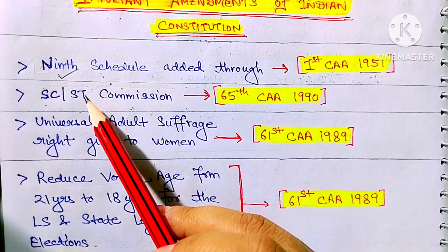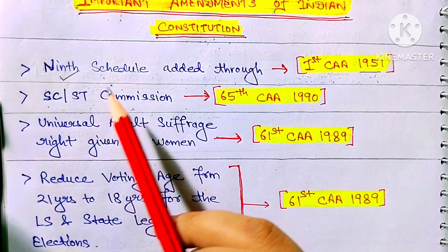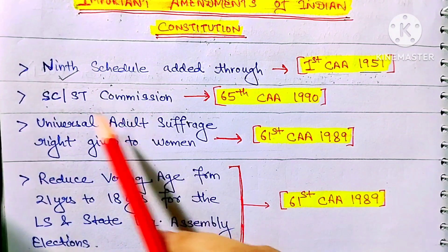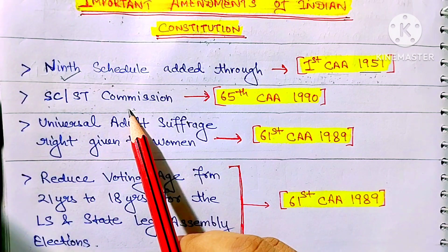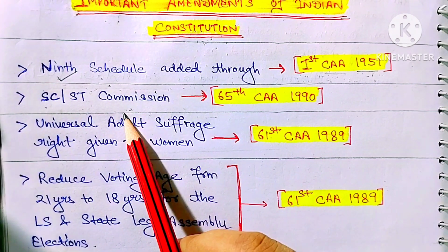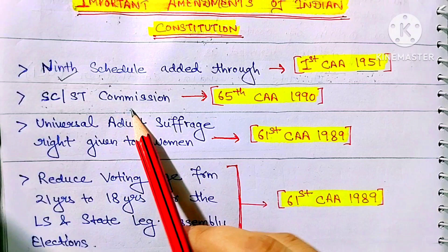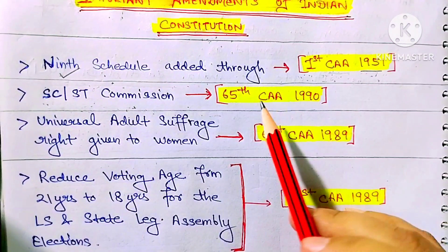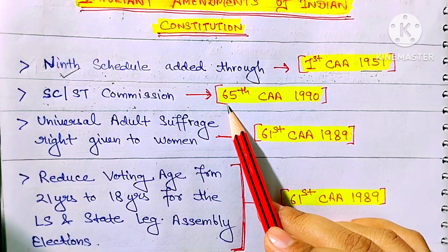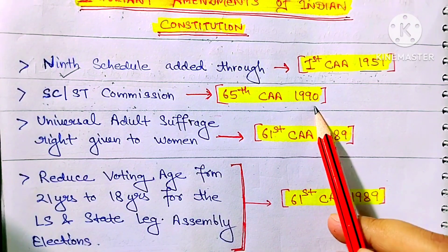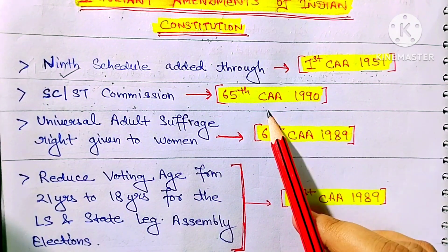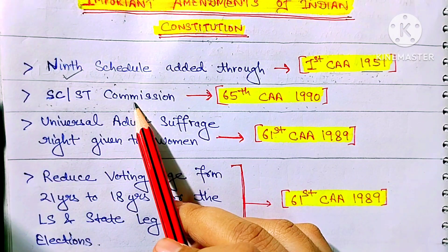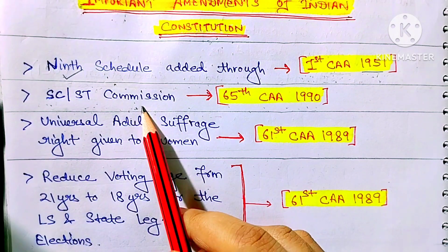Next question: which Amendment Act led to the creation of the SC/ST Commission? It was the 65th Constitution Amendment Act 1990. Under this amendment act, the SC/ST Commission was established in our Constitution.